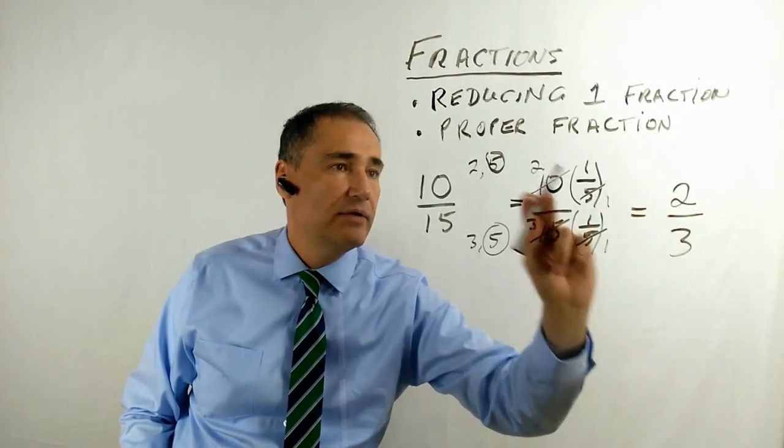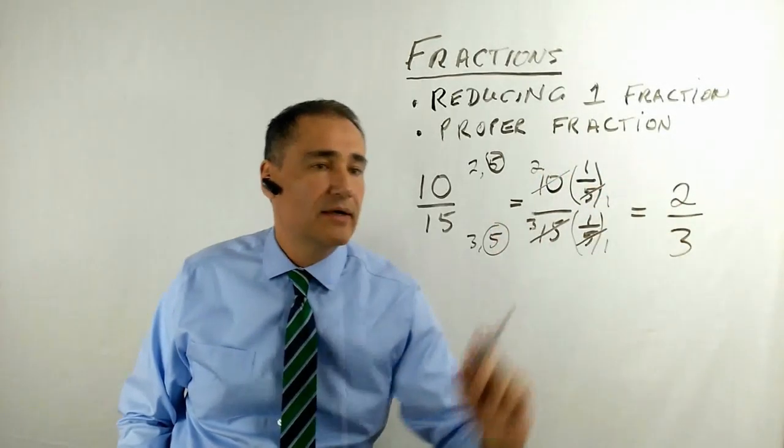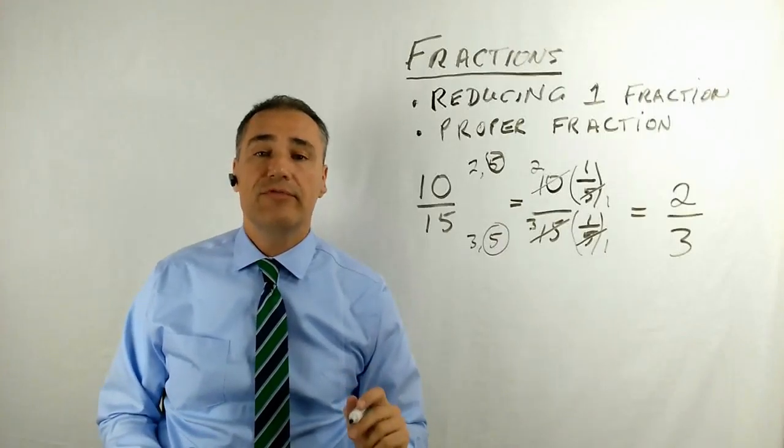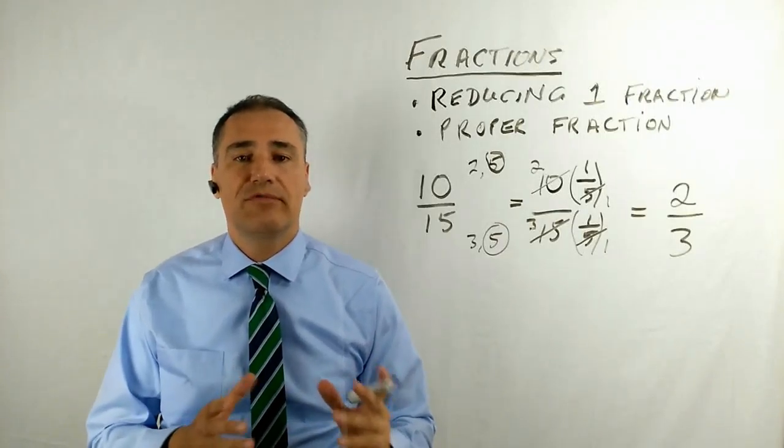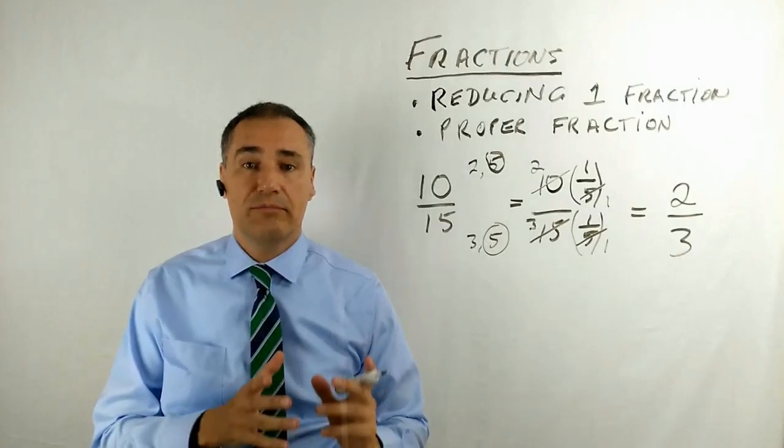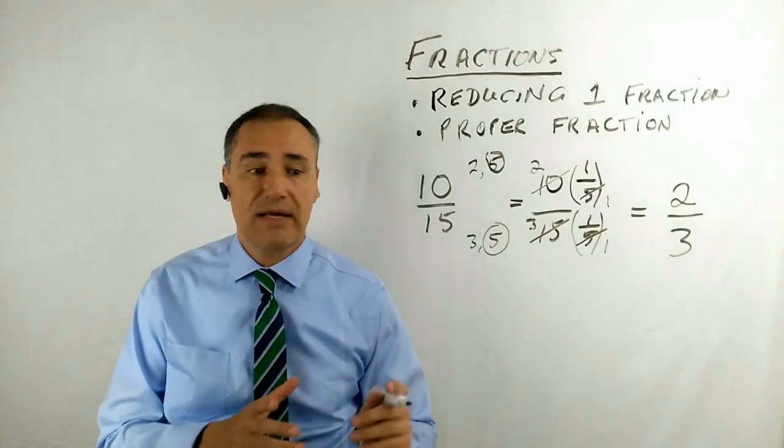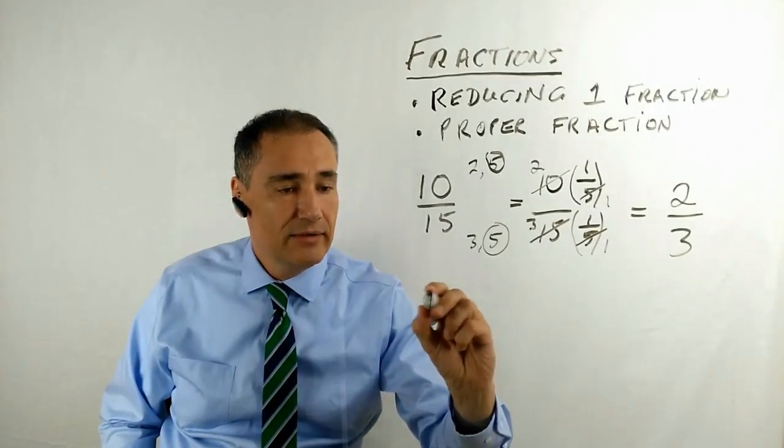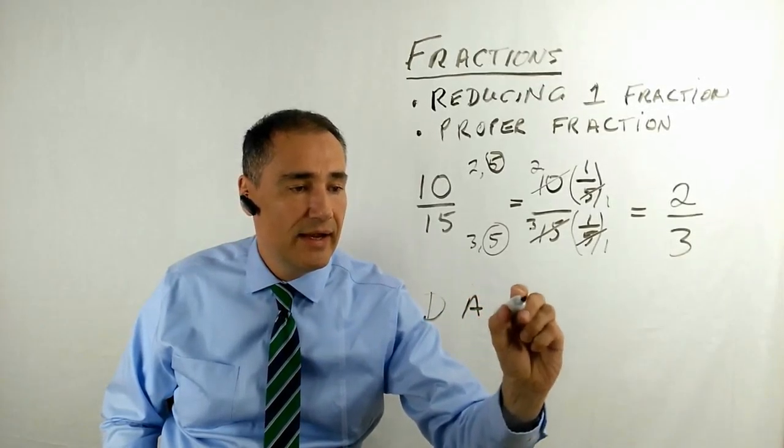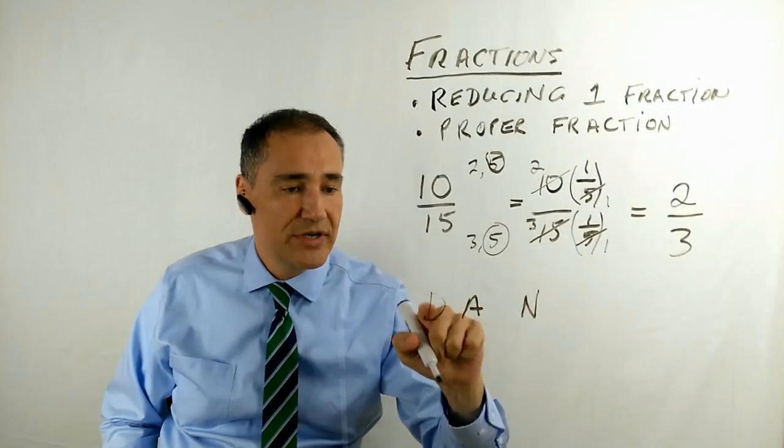So now you can reduce this 10 because it is divisible by 5 twice. This is divisible by 5 once. This is divisible by 5 three times. And this is divisible by 5 once. Which leaves you with 2 over 3. You just transfer the 2 here and the 3 here.